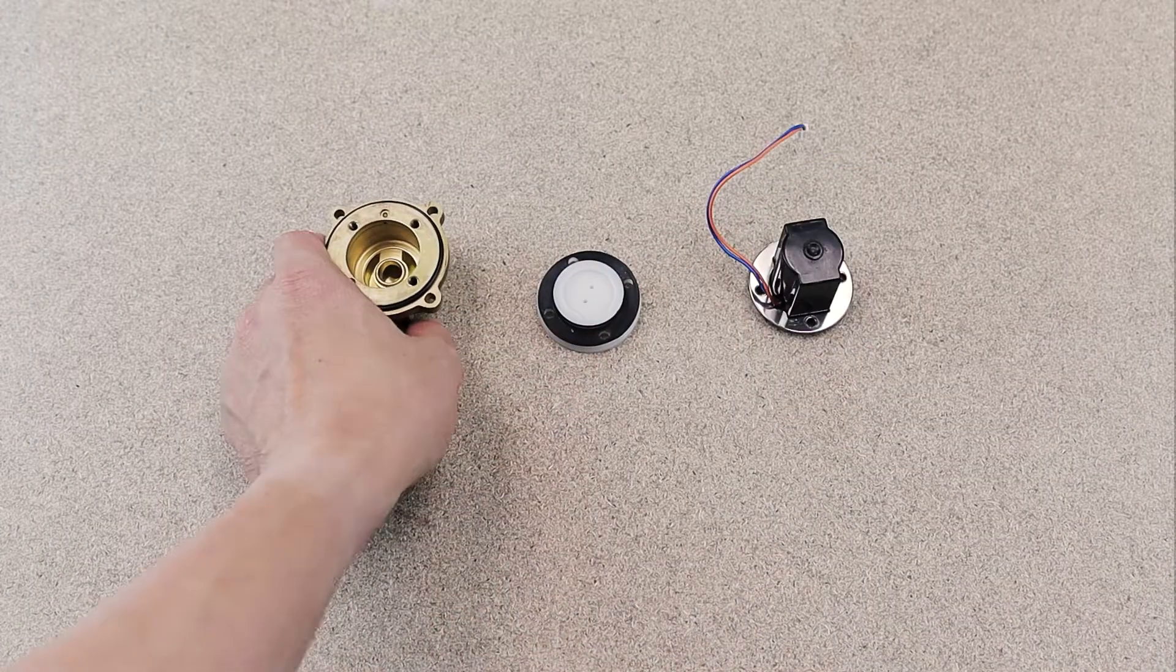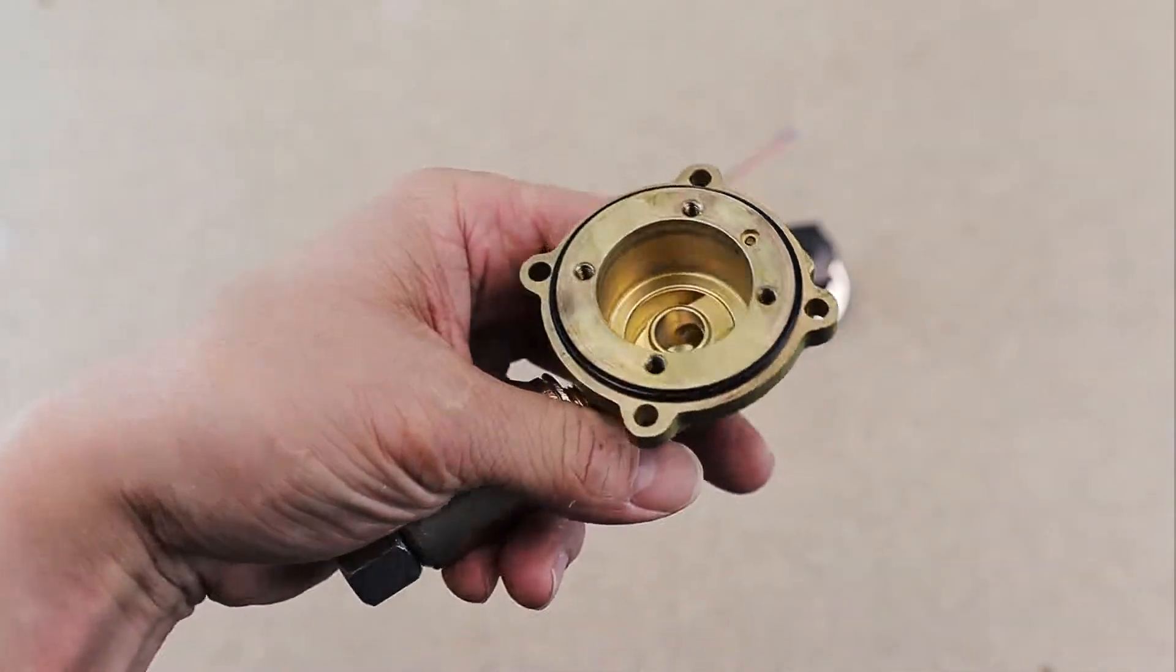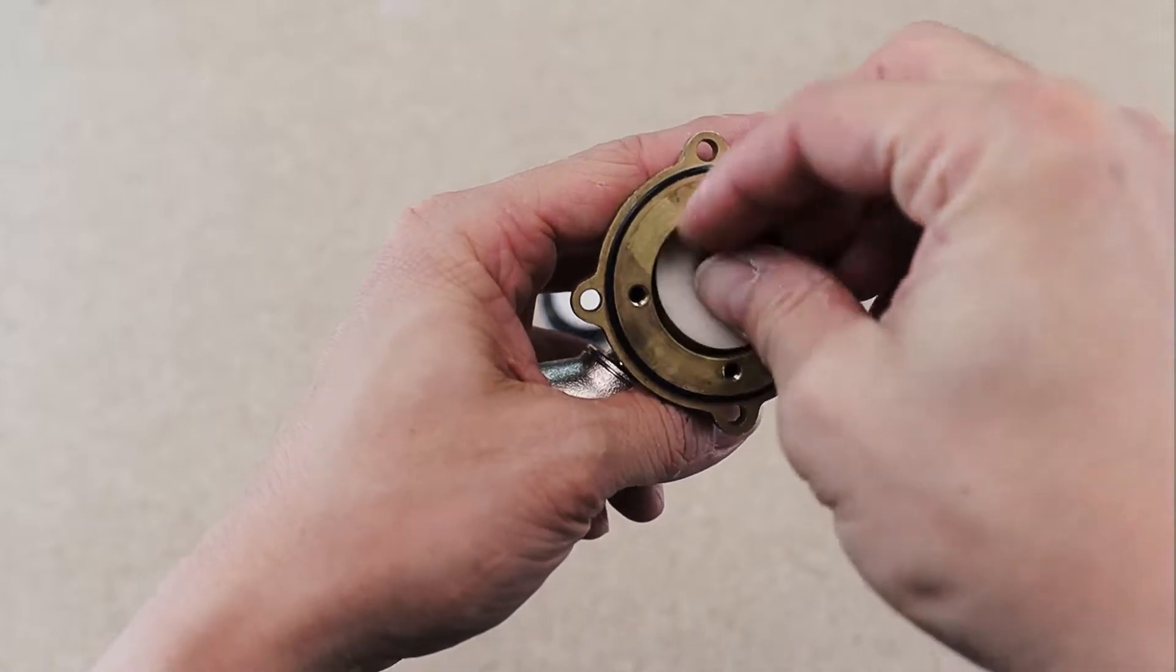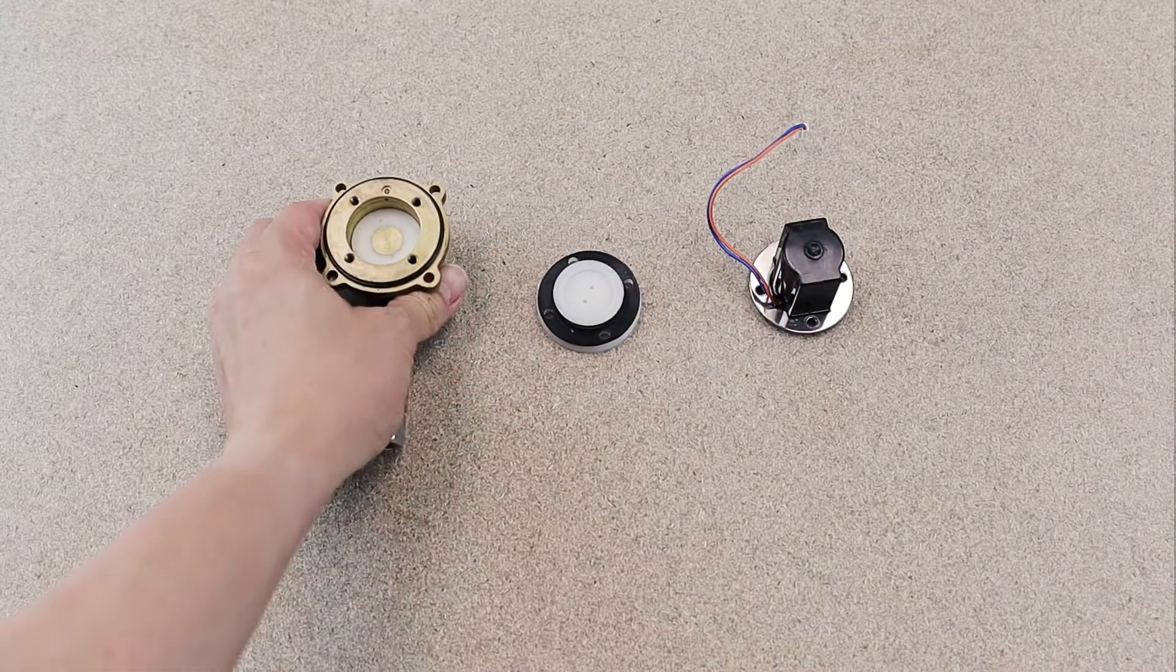Disconnect the solenoid valve module and clean it with a triple zero grade steel wool pad if needed. Install the new control disk into the solenoid valve module, pressing it in until it is fully seated.